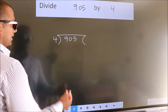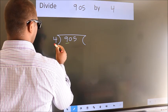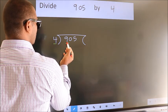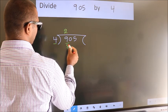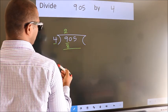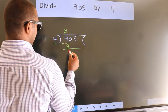Next. Here we have 9, here 4. A number close to 9 in 4 table is 4 2s 8. Now, we should subtract. We get 1.